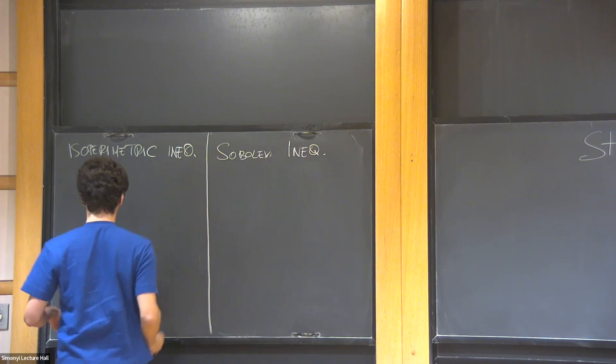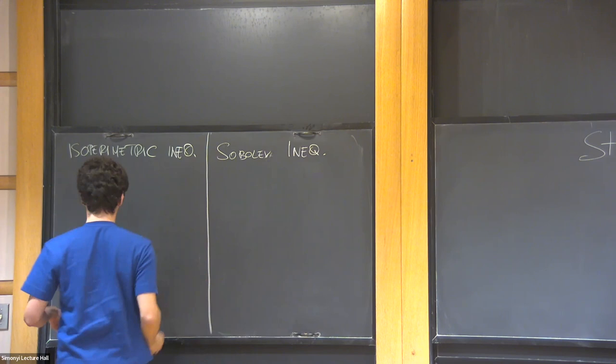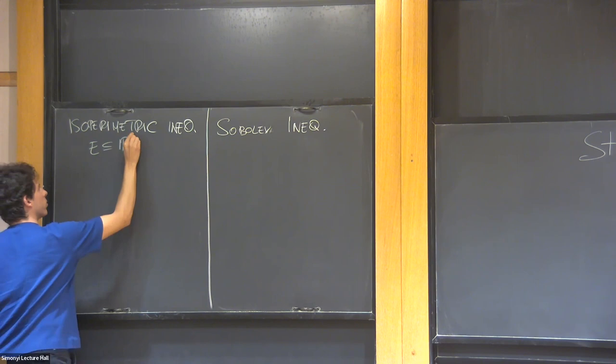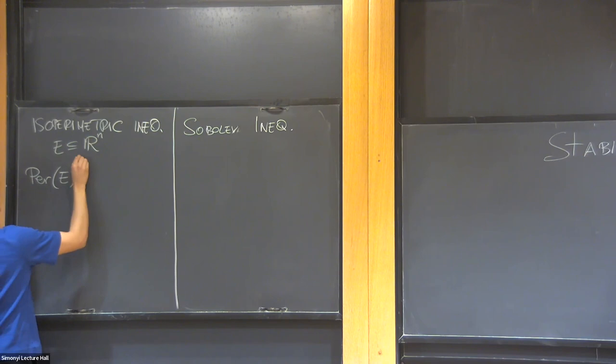So they're very famous, but let me recall them in any case. So you have a set in Rn, and you want to bound the volume with the perimeter, and up to scaling you have more or less only one choice, which is in fact the isoperimetric inequality.